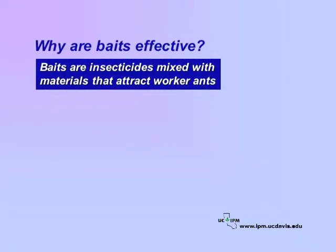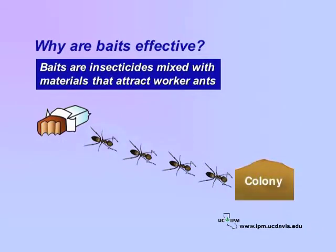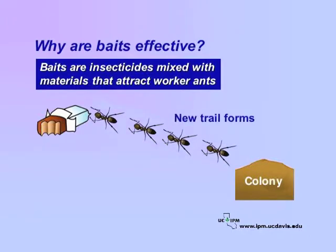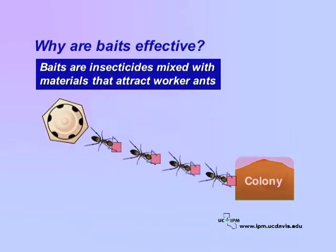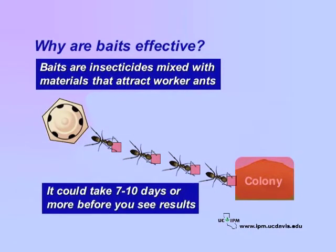Baits are insecticides mixed with materials that attract worker ants. When pesticides are needed in an ant management program, baits are the best choice. When worker ants search for food, they take it back to the nest to feed the queens and immatures. Baits work the same way. The advantage of baits is that they kill the ants in the colony, not just the workers in the trail. Killing the ants in a trail with sprays will provide only temporary relief because a new trail will soon emerge from the colony. Recognize that baiting takes patience. Baits must be slow-acting so that workers are not killed before the bait reaches the colony. It could take 7 to 10 days or more before you see the results. Bait products are safer than sprays because there is less human exposure. Remember, baits won't be effective alone — you must also remove food sources and seal up entryways.